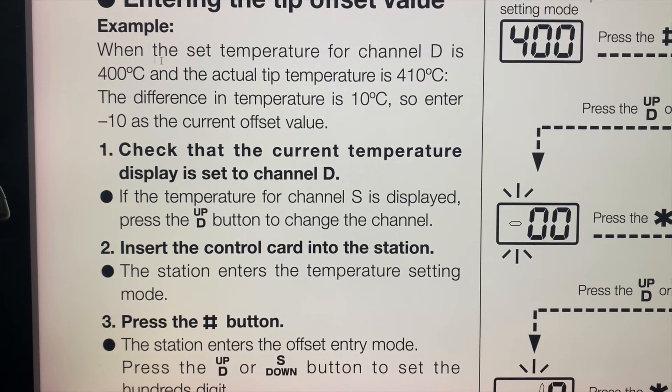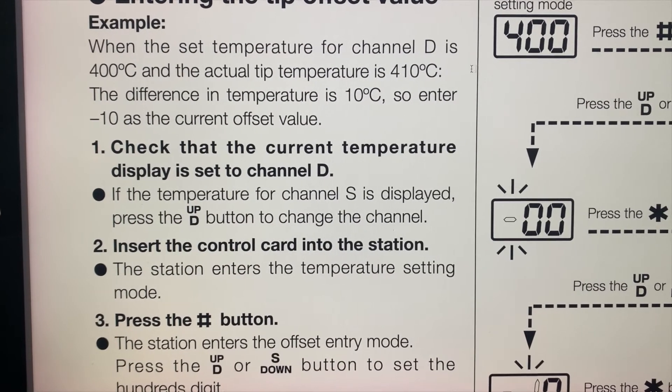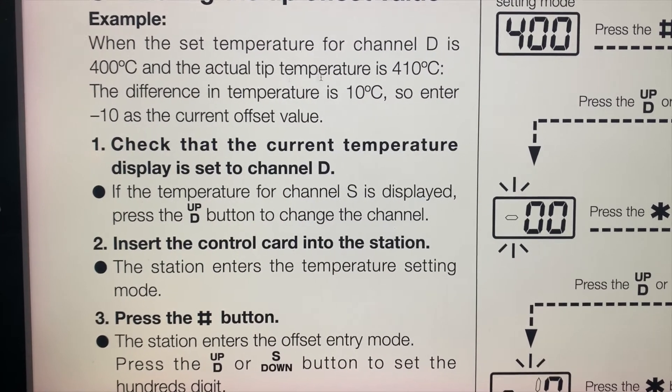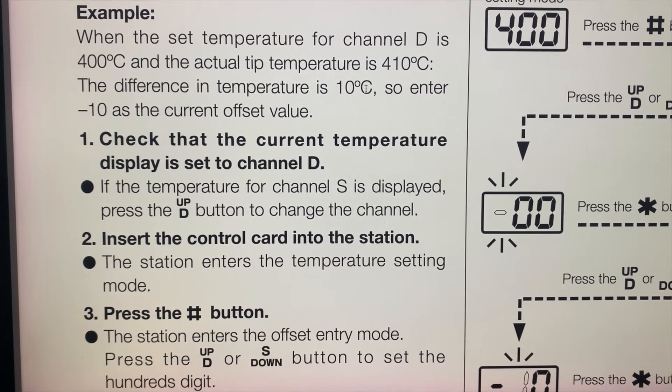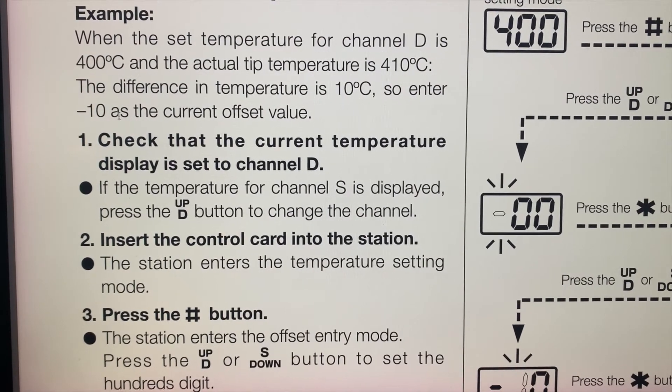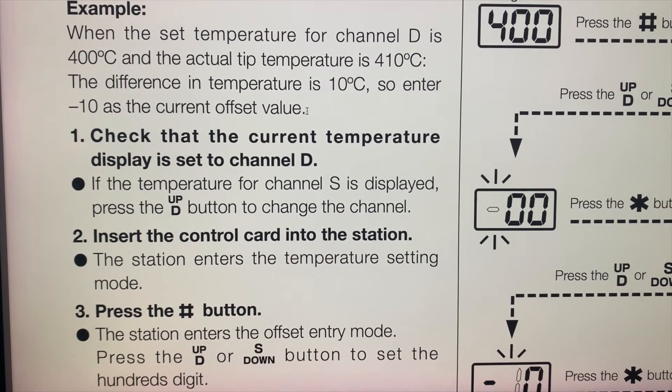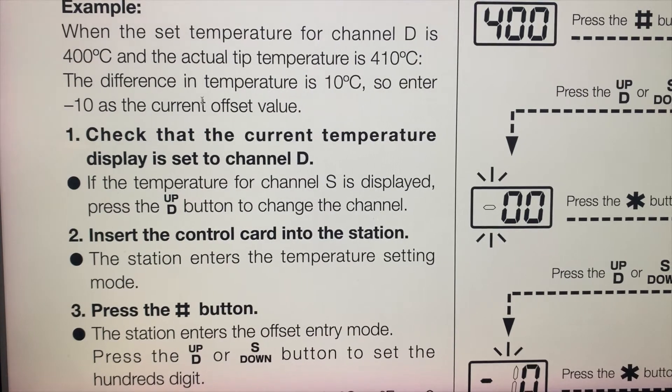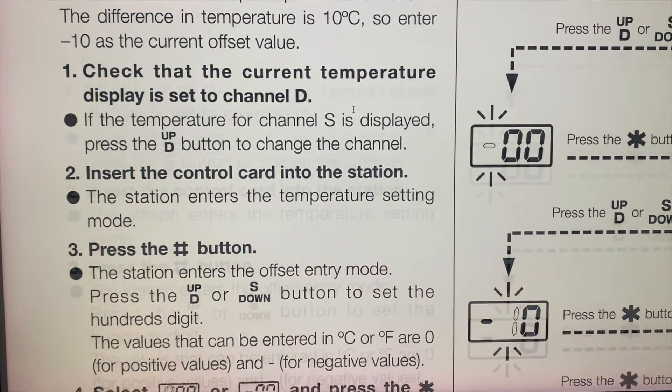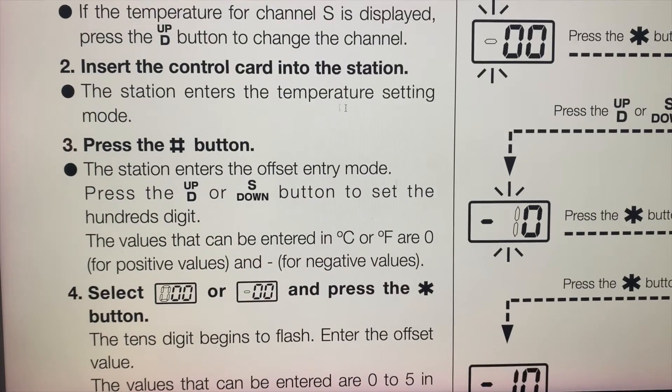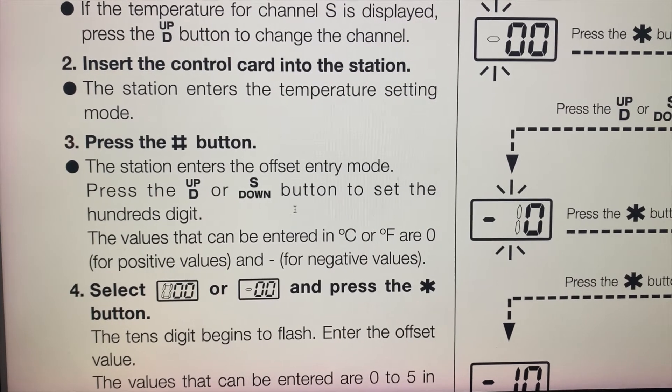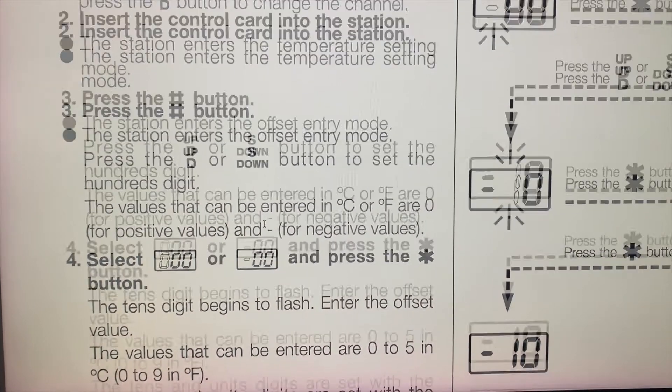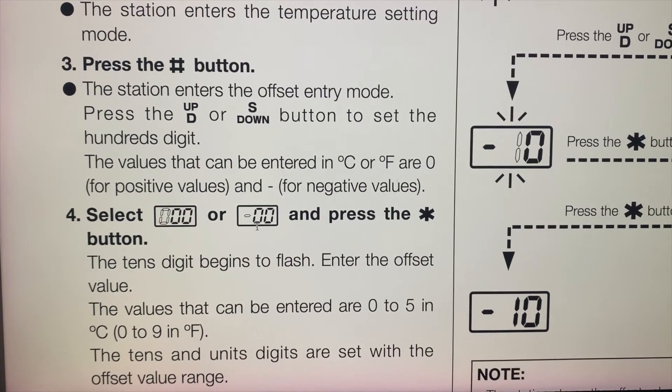So here we have the settings for how to set this offset temperature. So when the set temperature for channel D is 400, the actual temperature is 410. So the difference is 10 Celsius. So enter a minus 10 as the offset value. So basically, you enter a minus offset value if it's too high, and you enter a positive offset value if it's too low.